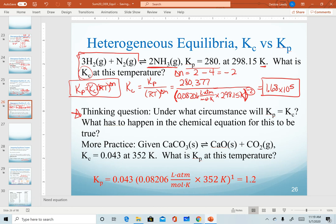Hopefully you recognize that it's actually dependent on our delta N value. If delta N were to be equal to zero, that would raise the entire RT quantity to zero, which means that would become a one, and then your Kc would equal to Kp.